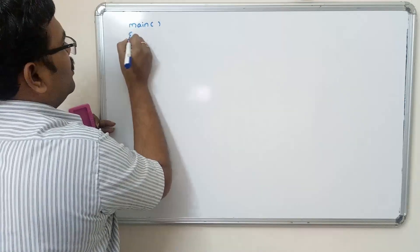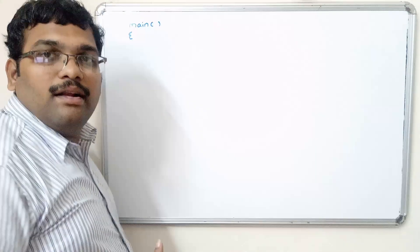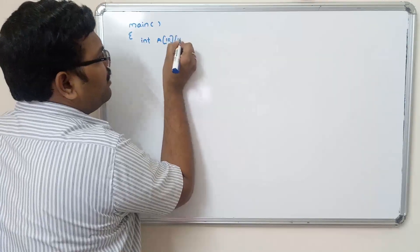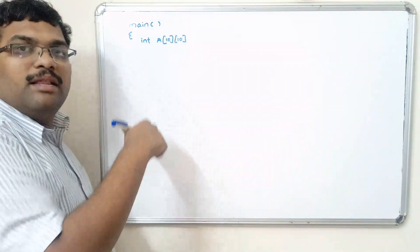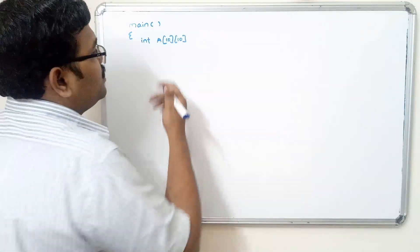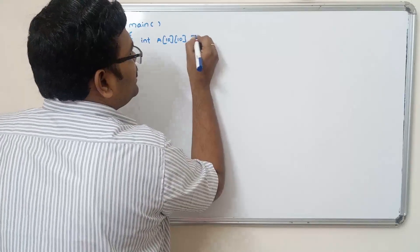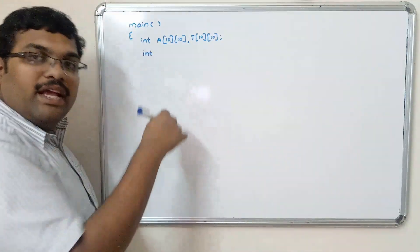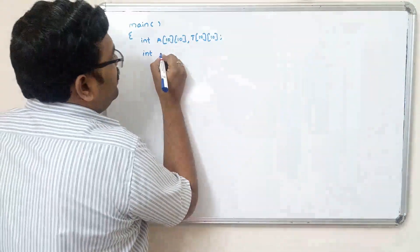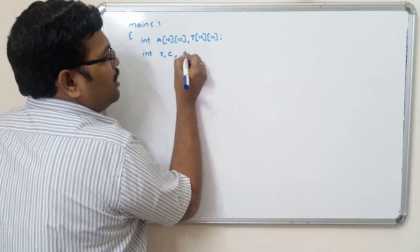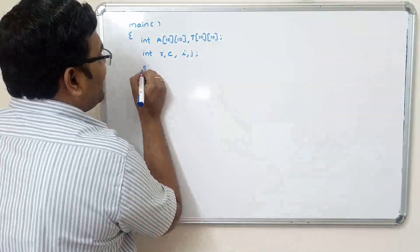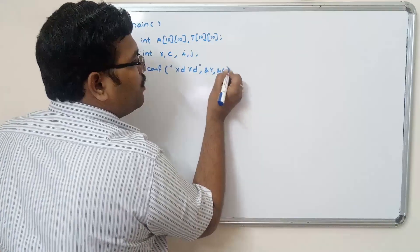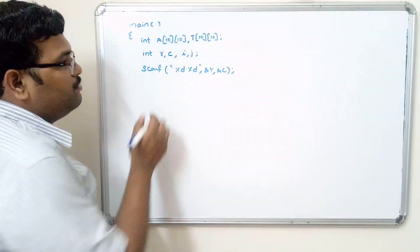In the main function, we declare two arrays: int A[10][10] — we give a maximum size of 10x10, and later in the program we restrict it to the actual number of rows and columns — and int transpose[10][10], also of maximum size 10x10. Then we declare int rows, columns, and read them using scanf with %d %d to get the number of rows and number of columns.